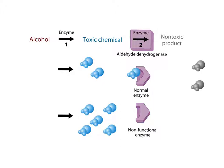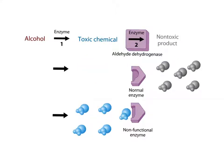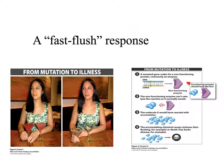In fast flushers, the first process occurs fine — alcohol is easily broken down into a toxic chemical. As time goes on, that toxic molecule builds up and cannot be further broken down due to the non-functional enzyme in their body. This results in the fast flush response, where Isabella starts to feel sick and flushed. If Isabella continues to drink, she may accumulate so much of the toxic chemical that it could become fatal.